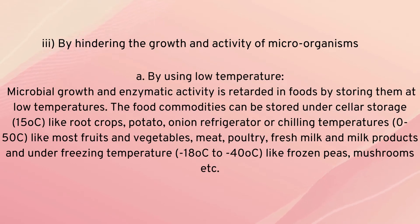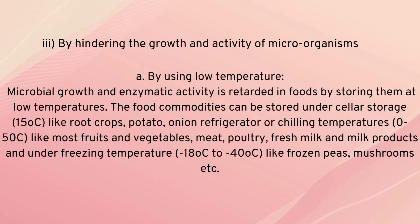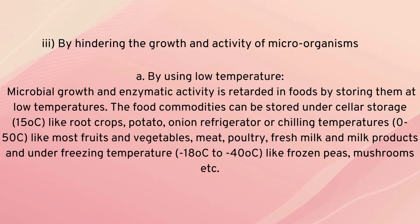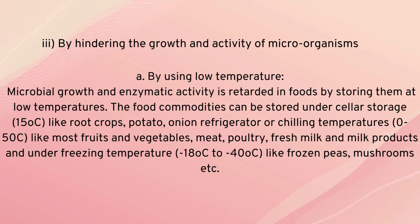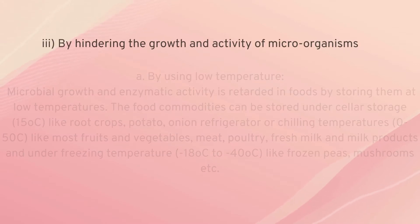The third method involves hindering the growth and activity of microorganisms using low temperature. Microbial and enzymatic activity is retarded in foods by storing them at low temperatures. Food commodities can be stored under cellar storage — for example, fruit crops, potato, and onion — at refrigerator or chilling temperatures for most fruits, vegetables, meat, poultry, and fresh milk and milk products, or under freezing temperatures for foods like frozen peas and mushrooms.